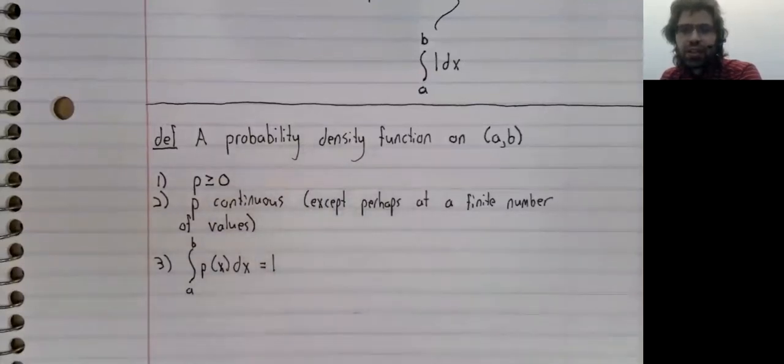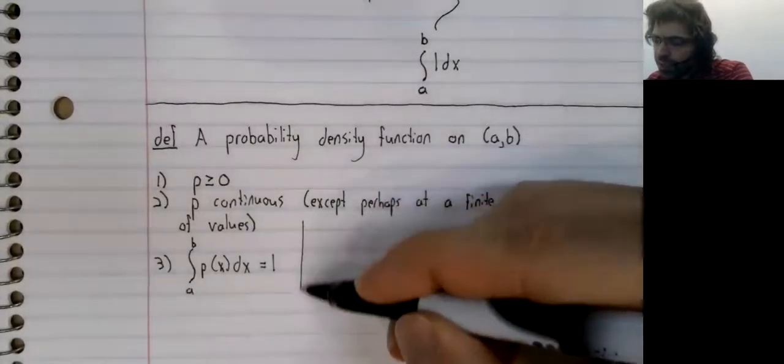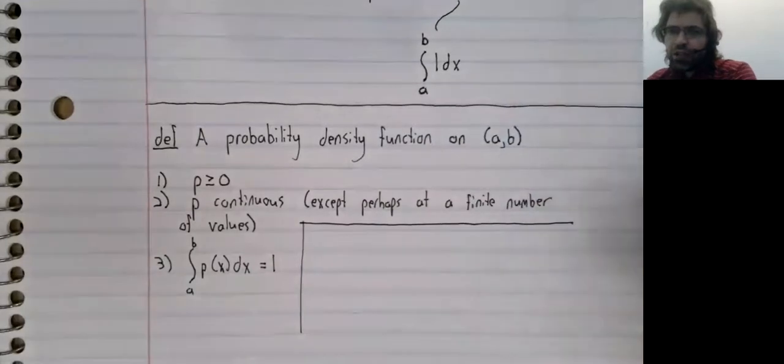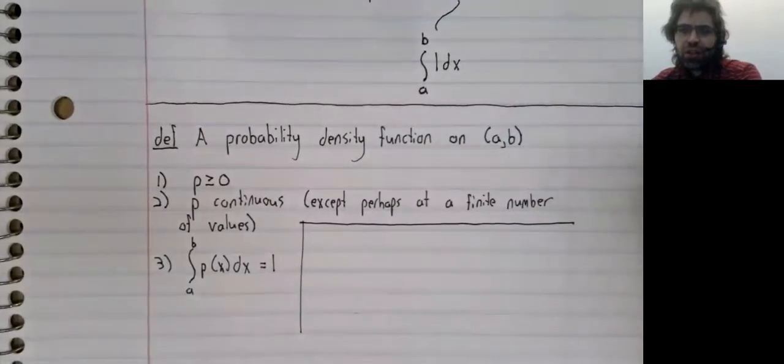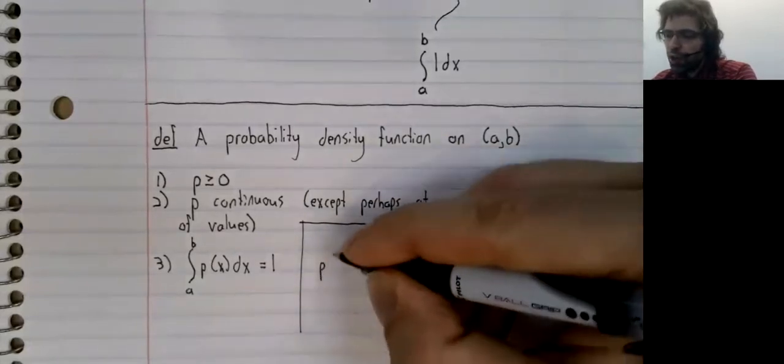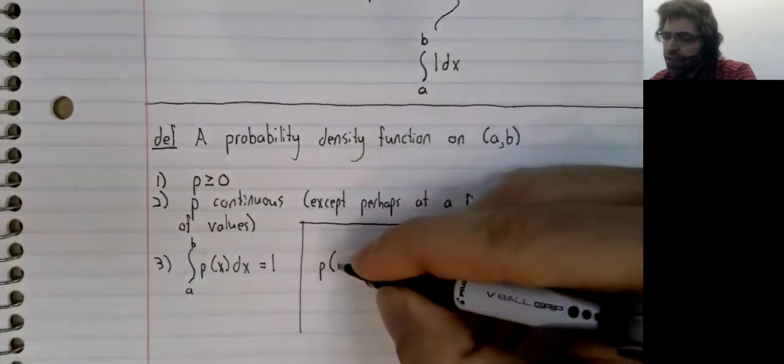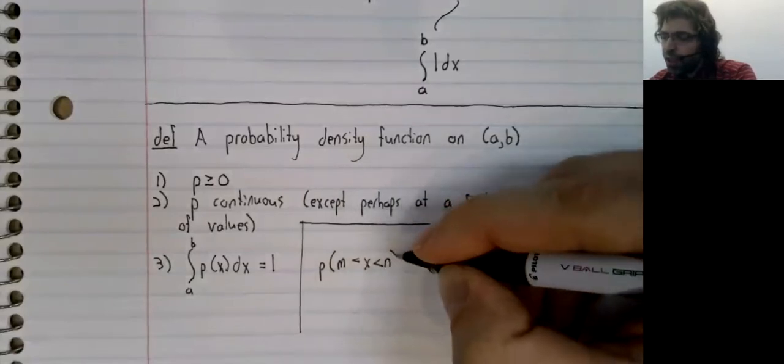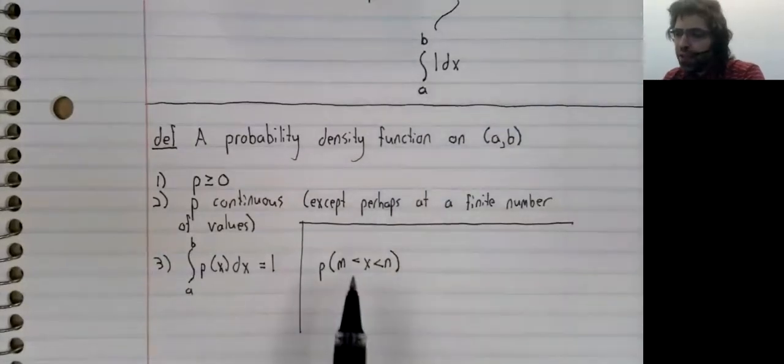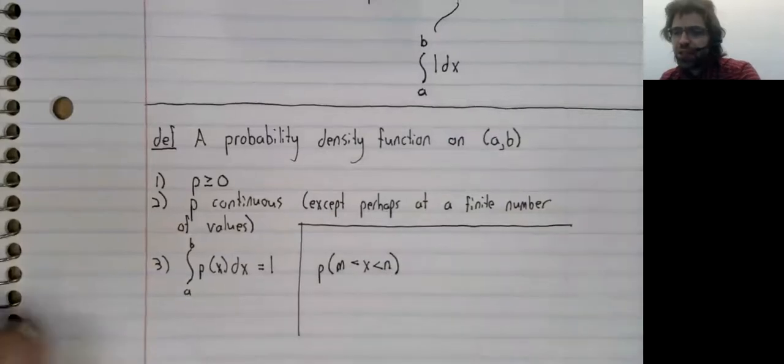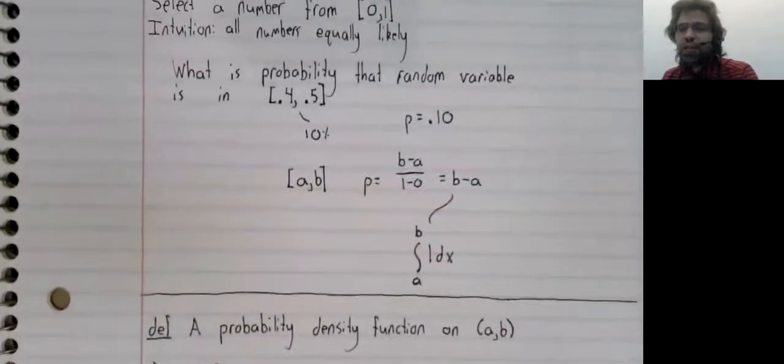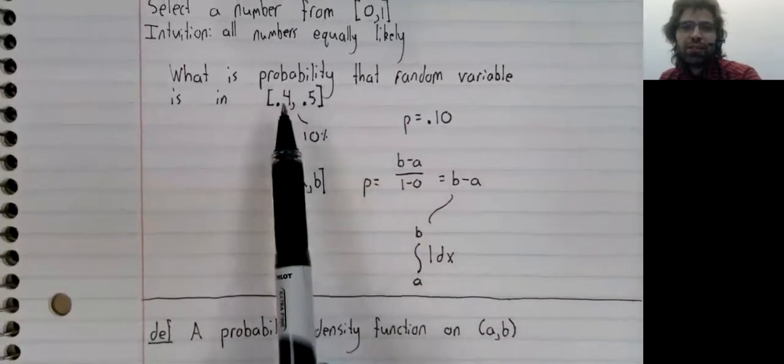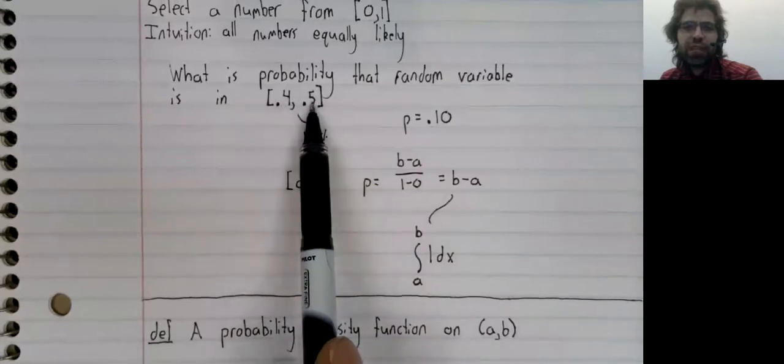A probability density function gives us a way of discussing the probability that a randomly selected number falls between two other numbers. That is to say, if we select a number at random and we want to know what the probability is that it's between M and N, like up here when we asked what the probability is that it's between 0.4 and 0.5,